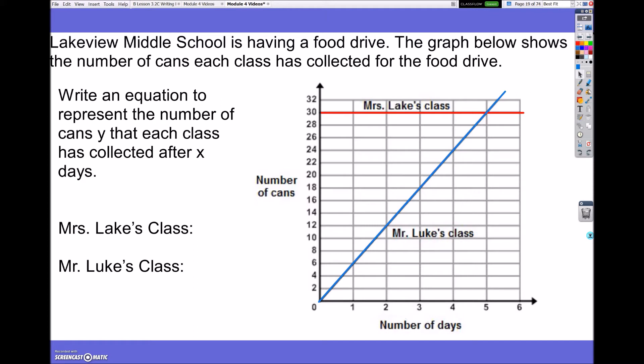So, in this example, we have the one I highlighted in red, which is Mrs. Lake's class, and Mr. Luke's class, which is highlighted in blue. And I want us to come up with an equation in y equals mx plus b form. Now, I want you to notice in red Mrs. Lake's class, this is a horizontal line.